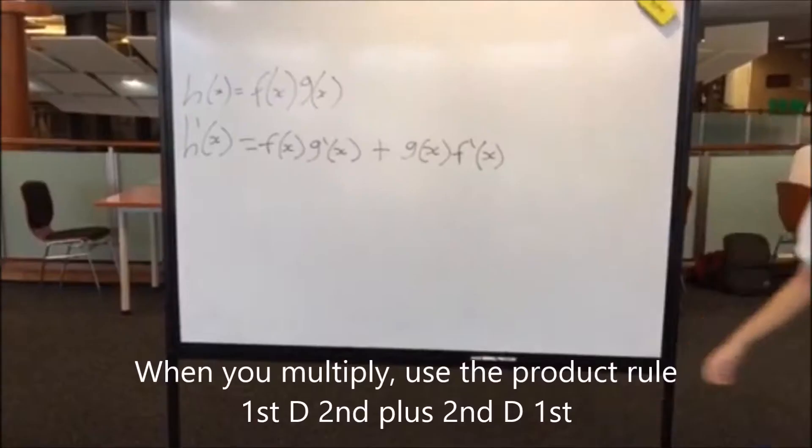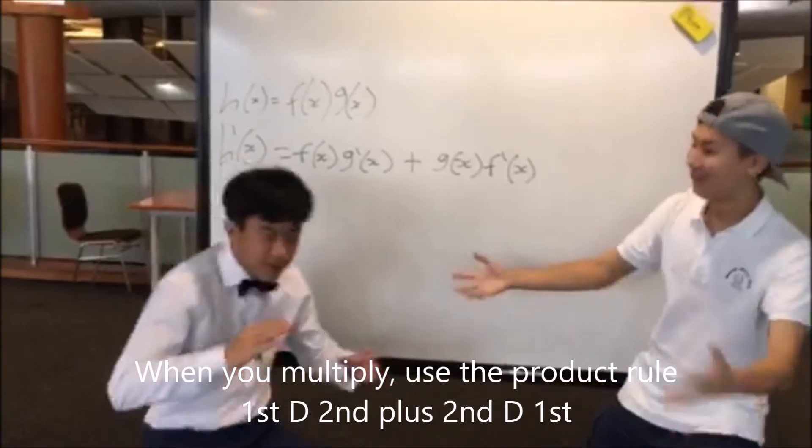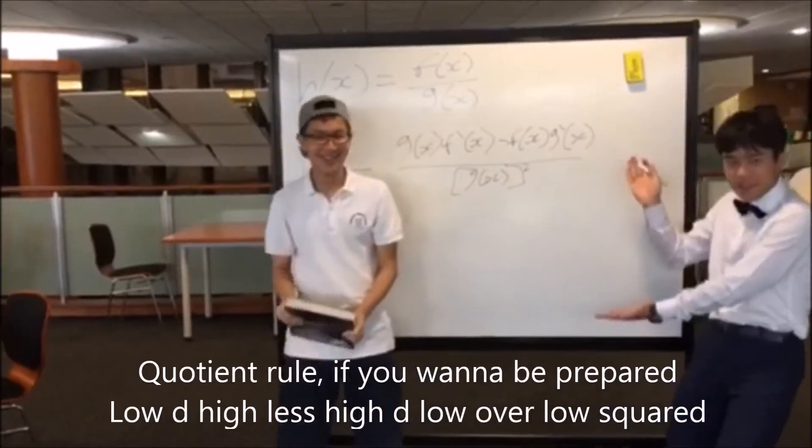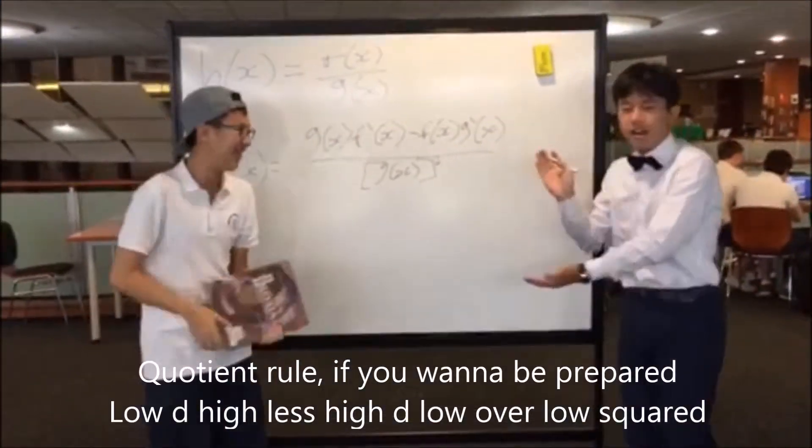When you multiply, use the product rule. First d second plus second d first. Quotient rule if you want to be prepared: low d high less high d low over low squared.